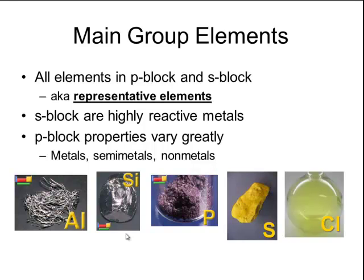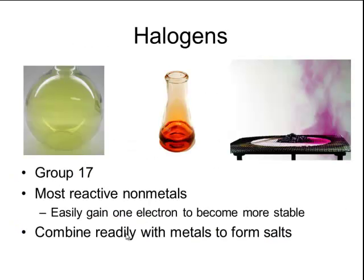Continuing one element over, we get to chlorine, which is a gas. Chlorine is a member of the halogen family. The halogens are group 17 on the periodic table, and they are the most reactive non-metals on the periodic table. The reason they are so reactive is because they easily gain one electron in order to become more stable. Because they are highly reactive, they combine readily with metals to form compounds called salts.